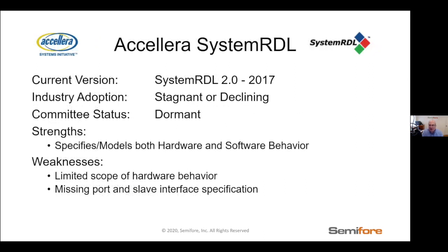Accelerate System RDL — I was involved in System RDL since 2000 as it worked its way through Cisco Systems, Denali Systems, the Spirit Consortium initial version in 2009, and then I was also participating in the 2017 version of the standard. Realistically, this standard is sort of stagnant or declining. Our customers who do use System RDL are mostly transitioning over to CSR spec, our domain-specific language for register specification. This committee is dormant at this time; after we published in 2017, we basically disbanded, so there's nothing going on right now with System RDL.